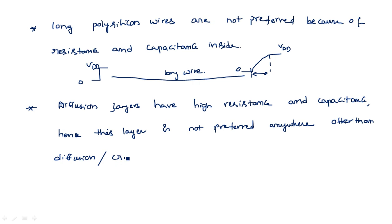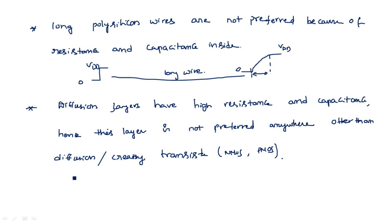Hence, the diffusion layer is not preferred anywhere other than creating transistors — either NMOS or PMOS. If you observe stick diagrams and layout diagrams you can see that diffusion layers are used only in the creation of transistors: polysilicon over N-plus diffusion, or polysilicon over P-plus diffusion. In all remaining places diffusion is not used because of its resistance and capacitance.